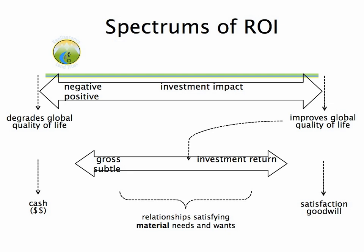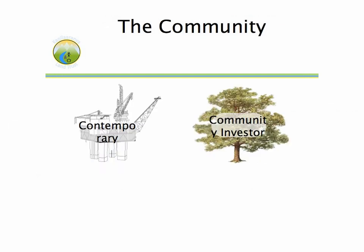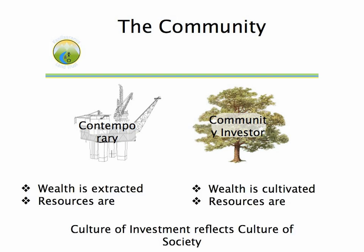To develop this concept a little further, I've chosen an image of an oil derrick for the contemporary investor and the oak tree for the community investor. By investor I mean money, time, and effort. In contemporary investing, what we're used to in our culture, wealth is extracted and resources are depleted. In community investing, wealth is cultivated and resources are renewed. There's really a shift in investment culture that's required for the community land trust to take off.